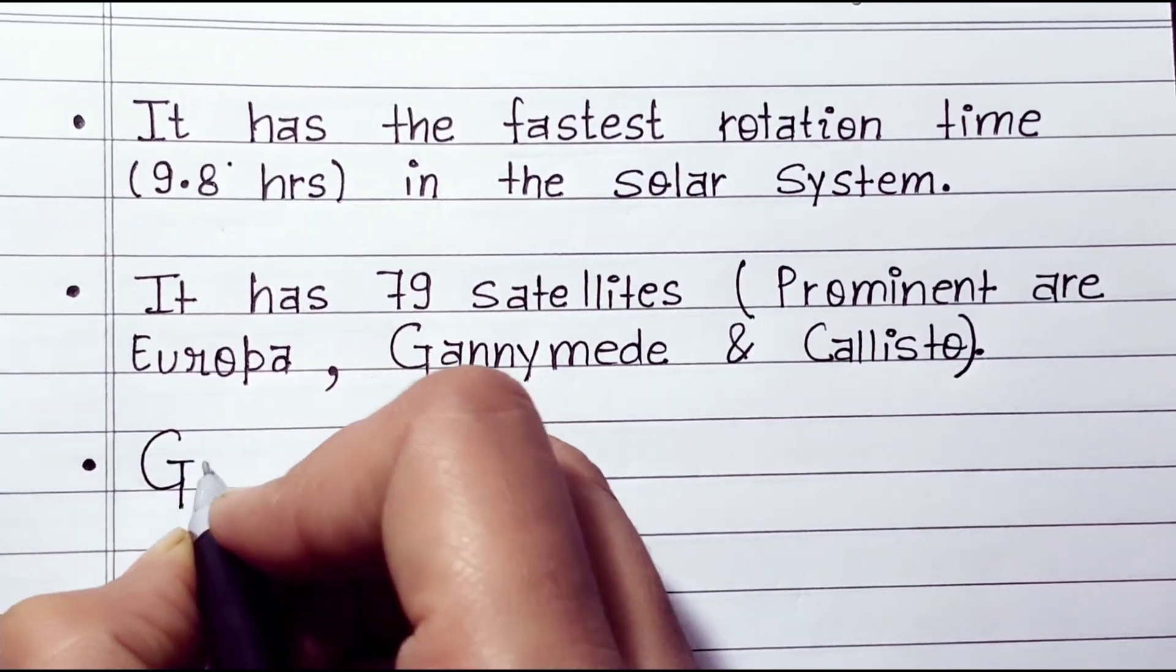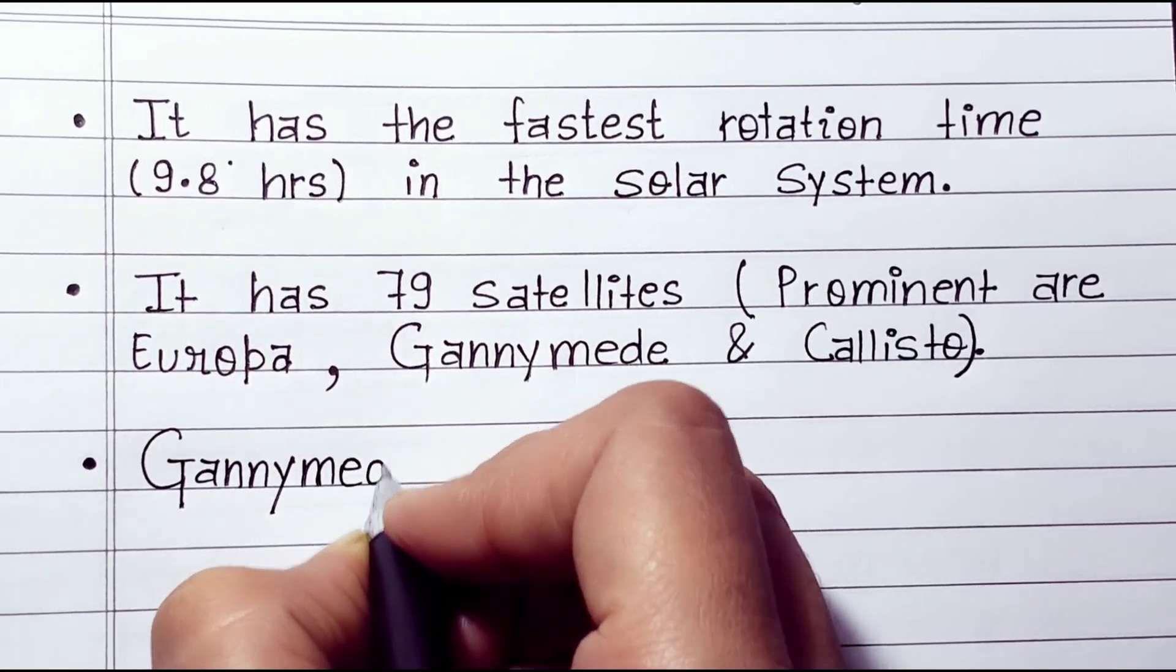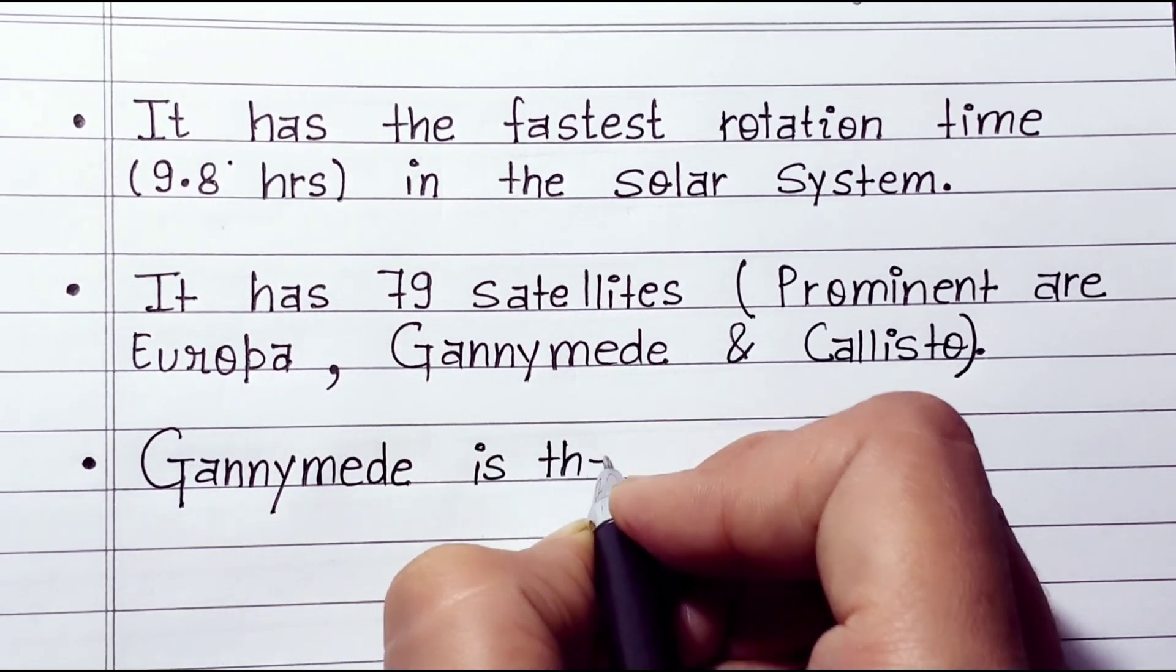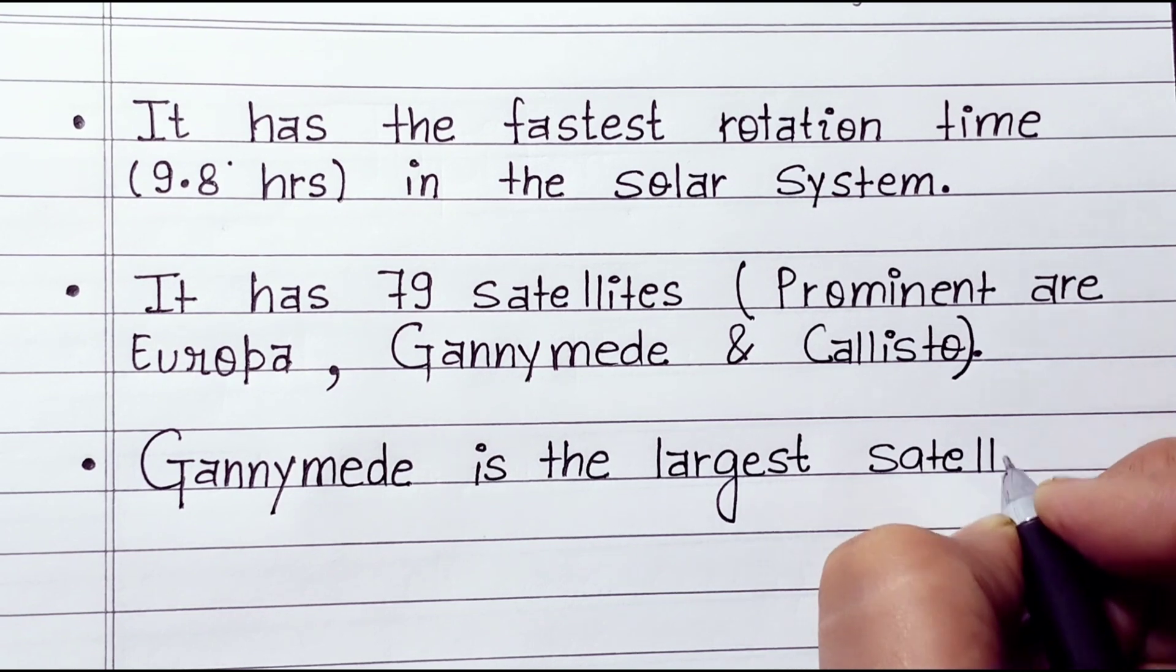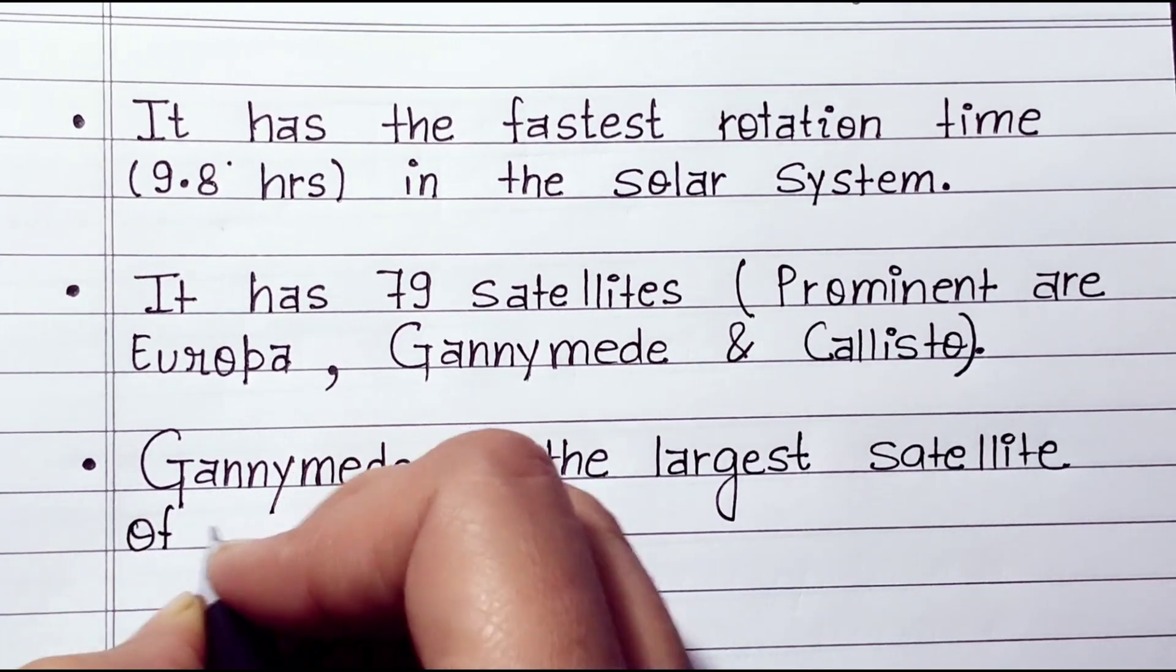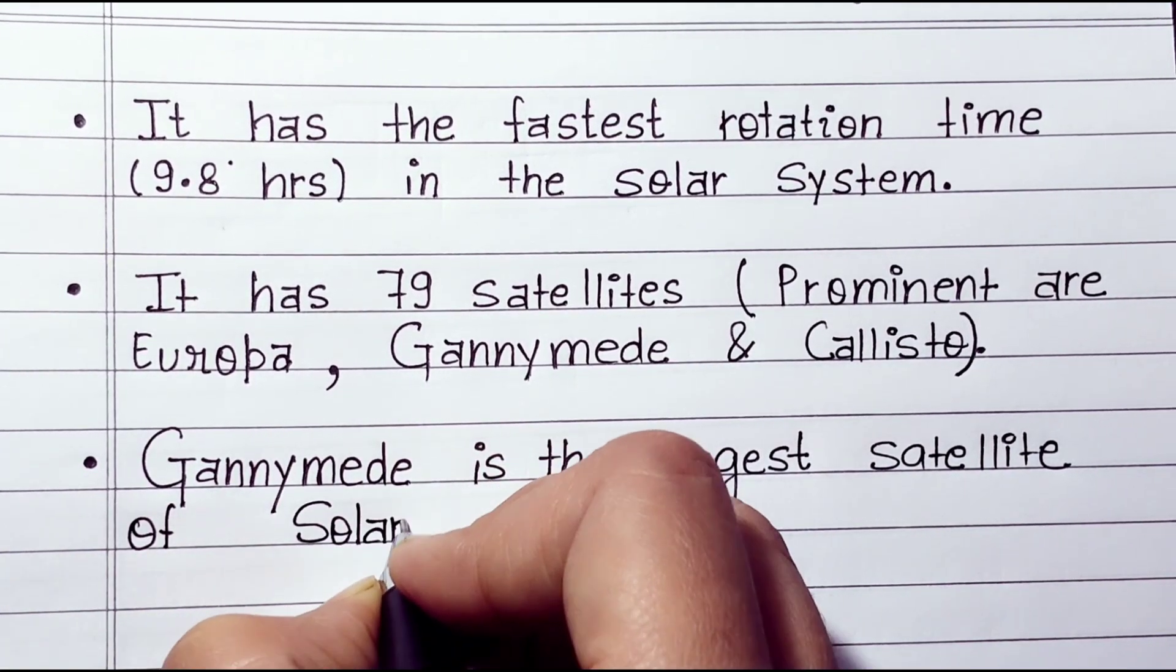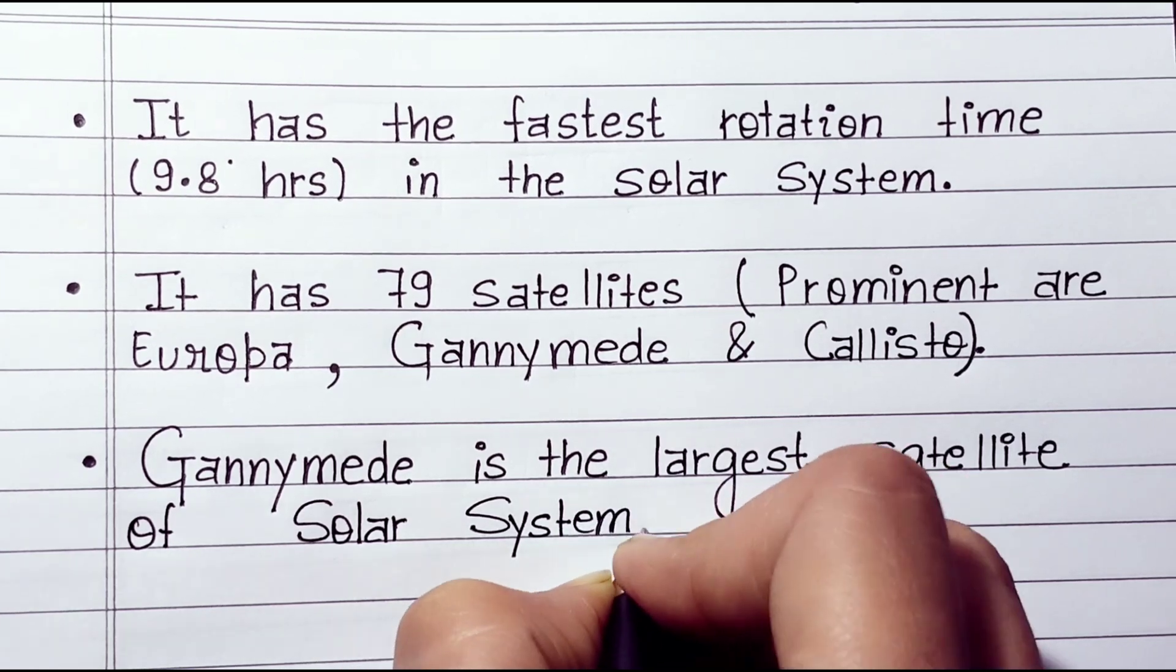It has 79 satellites. Prominent ones are Europa, Ganymede and Callisto. Ganymede is the largest satellite of the solar system.